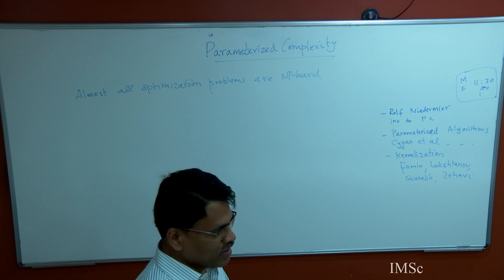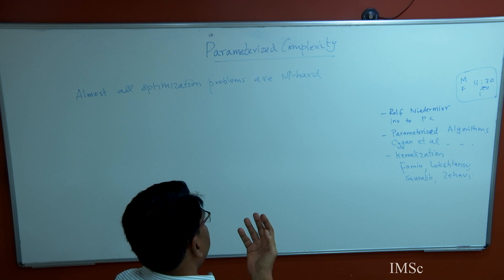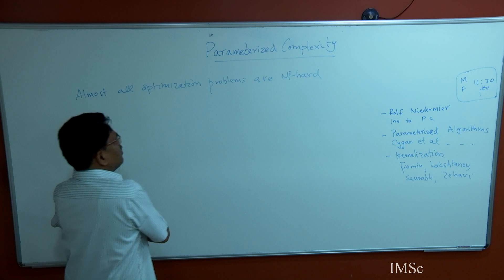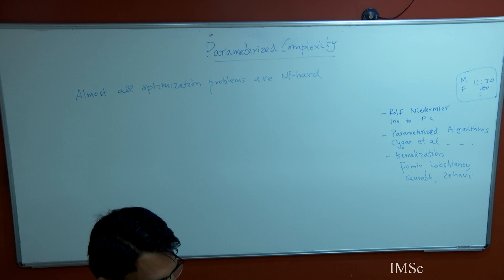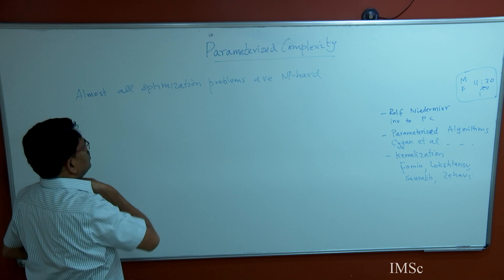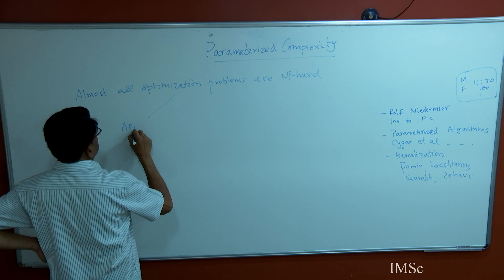We know that except for the half dozen problems you learn in the algorithms course — sorting, searching, shortest paths, max flow, min cut — everything else in the world is pretty much NP-hard. They all model real-world problems that need to be solved. NP-hard means you do not expect an algorithm that will solve all instances of the problem in time polynomial in the input size. But they need to be solved, because they are real-world problems. So what do we do?